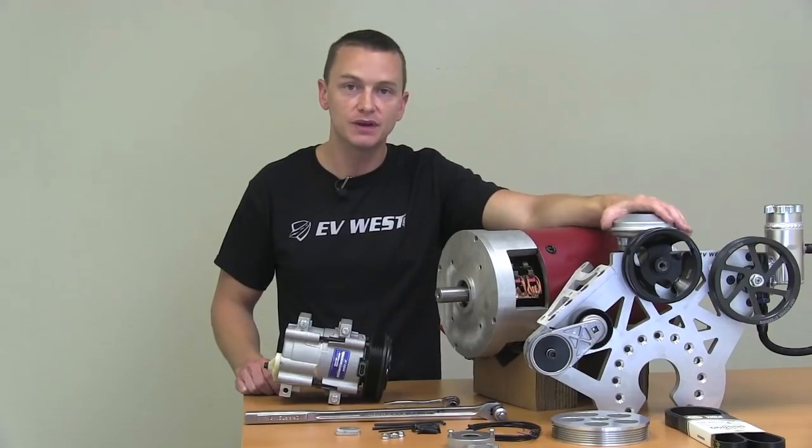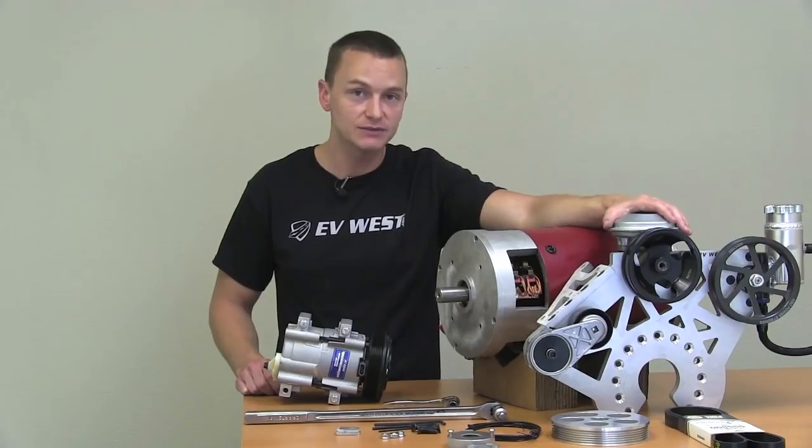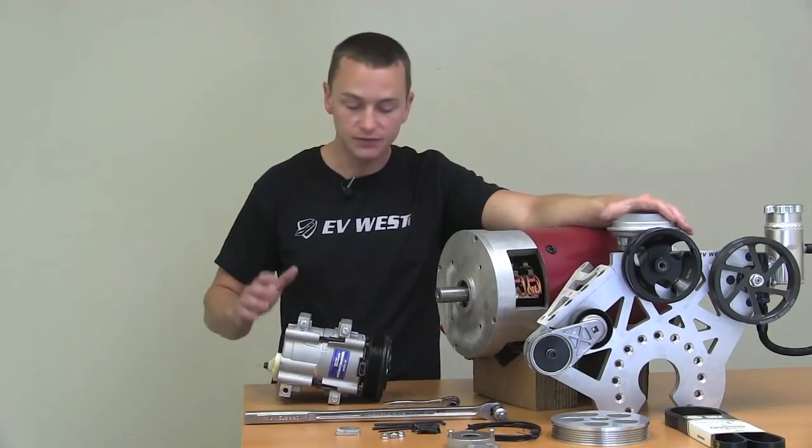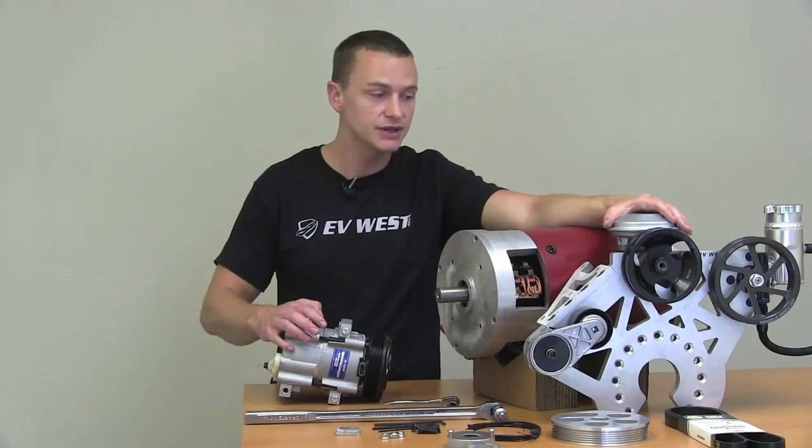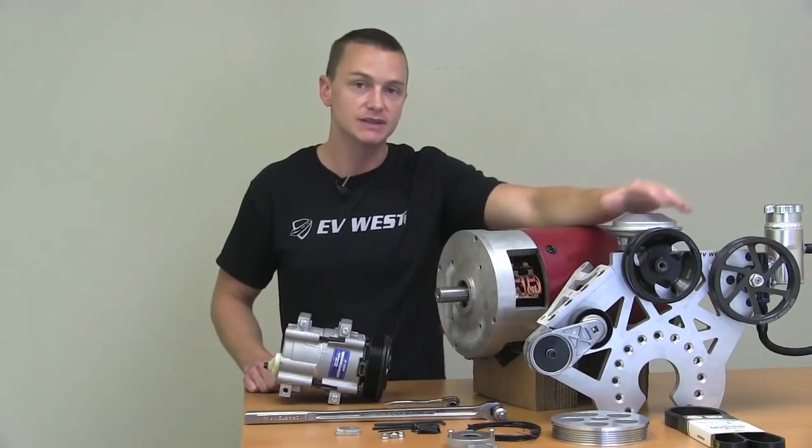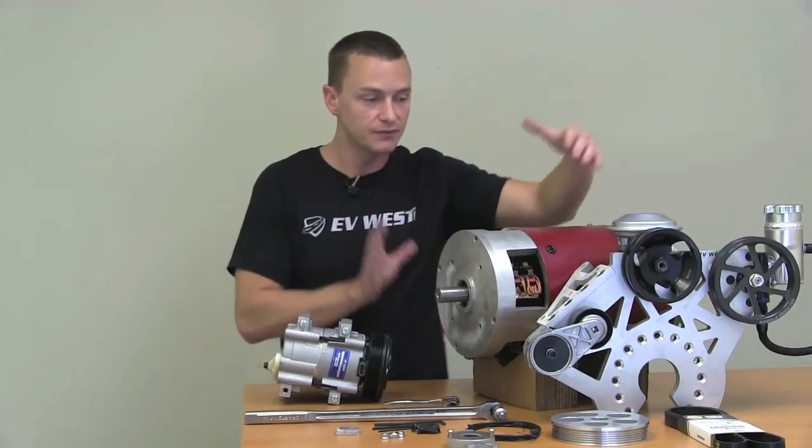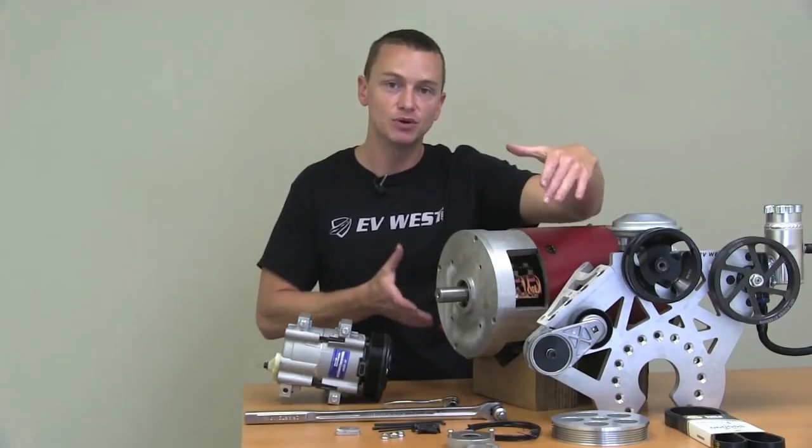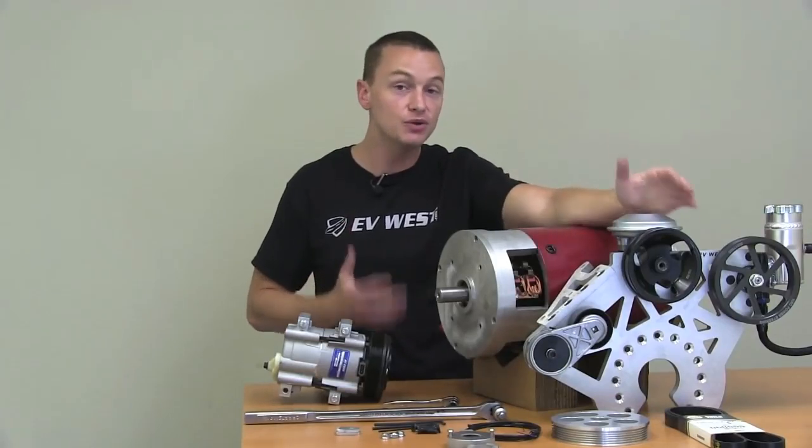So what we've done is we've put together a great kit that mounts on the front of any Warp 9 or Warp 11 motor. Very cost-effective solution and it will give you belt-driven air conditioning, power brakes, and power steering all from a very modular small kit that just bolts right onto the front of this motor. Very universal kit.